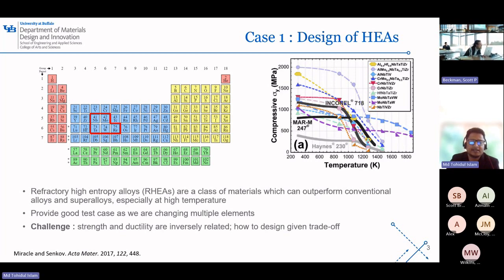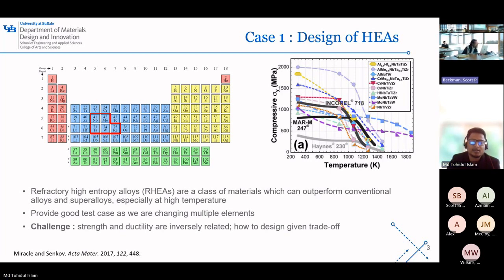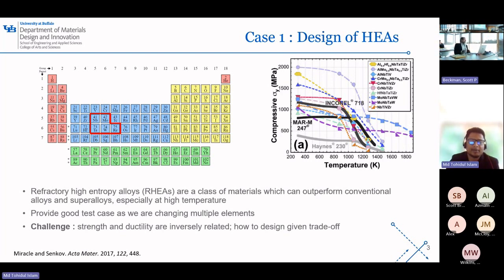The graph on the right compares the compressive strength of high-entropy alloys to traditional alloys — for example, nickel-based alloys. What we see here is that high-entropy alloys hold their ground better in extreme conditions. But we face a challenge: the usual trade-off between strength and ductility, making materials that are both incredibly strong and not too brittle.